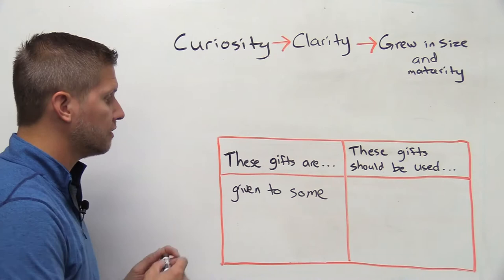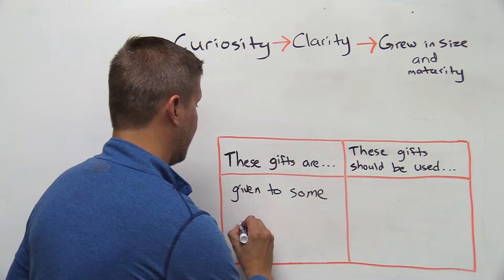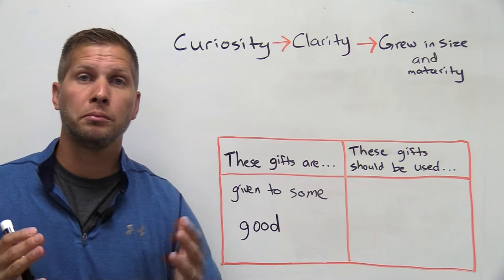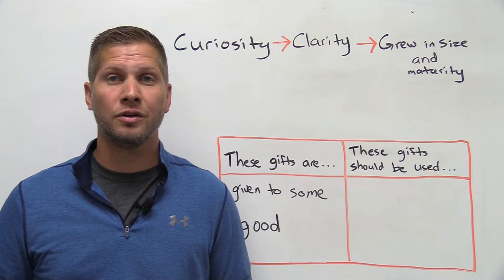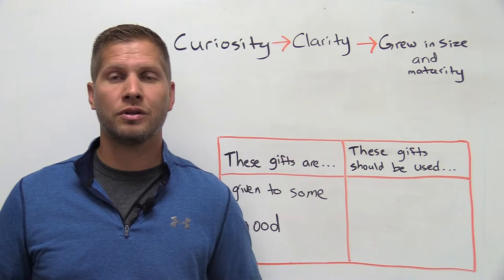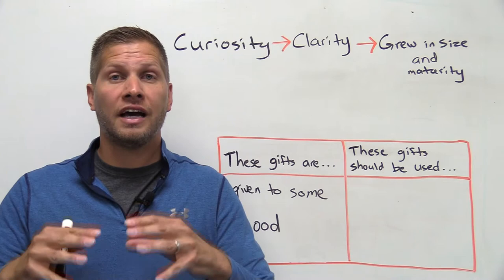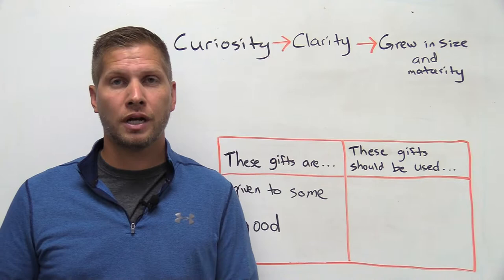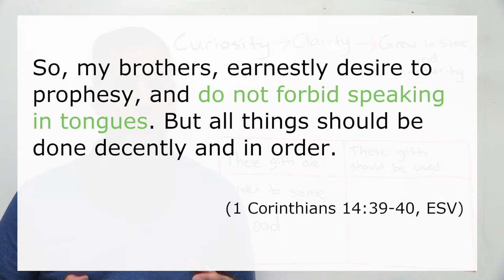The second thing we can learn about these spiritual gifts is that they are good. Sometimes when we are confused about something or don't understand something or think it's a little outside the box, we want it to stop and we want it to go away. Paul does not have that reaction when it comes to speaking in tongues. In fact, Paul elevates the spiritual gift of speaking in tongues, but as he elevates it, he gives it biblical boundaries. In other words, Paul's saying the problem is not with the spiritual gift, the problem is with immature believers. And so he writes in 1 Corinthians chapter 14, starting in verse 39, So my brothers, earnestly desire to prophesy and do not forbid speaking in tongues, but all things should be done decently and in order.